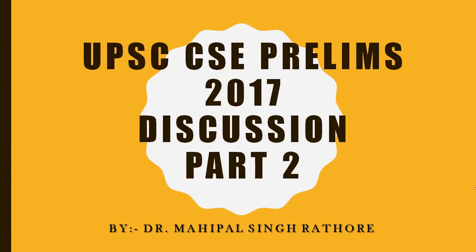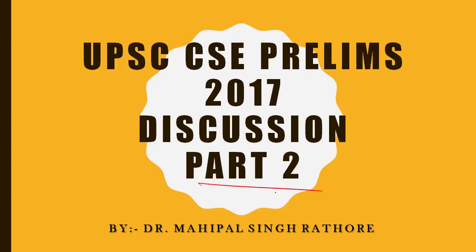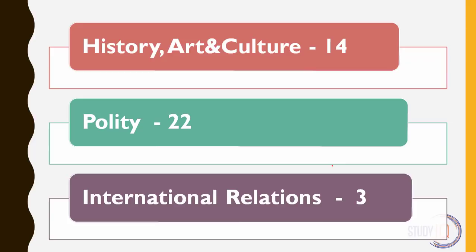Hello friends. I welcome you all to this discussion lecture series for Civil Services Prelims 2017 question paper. My name is Dr. Mahipal Singh Rathod, and in this part 2 of the discussion series, I will be discussing questions of history, art and culture, polity, and international relations. Other topics will be discussed by Bhumika Sanyi Ma'am in part 1. History had 14 questions this year — no change. Polity had 22, a great increase after past 2 years when it had gone down. International relations had 3.